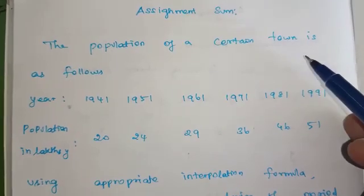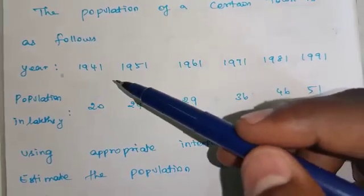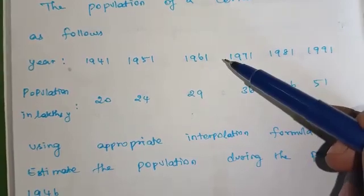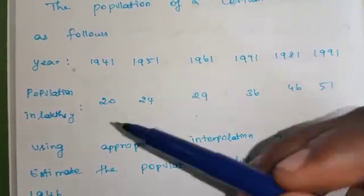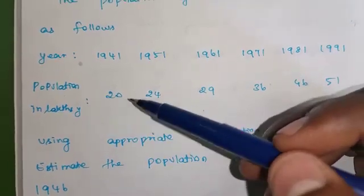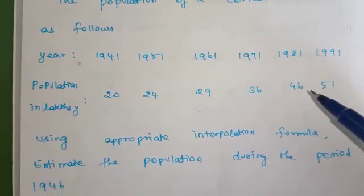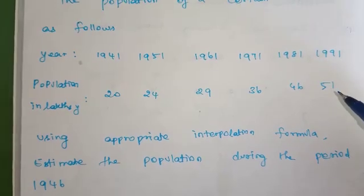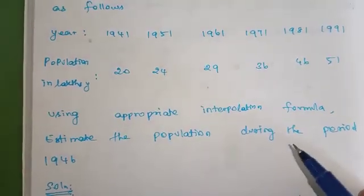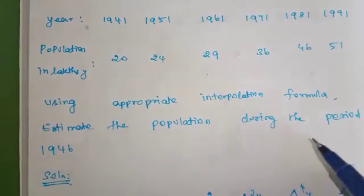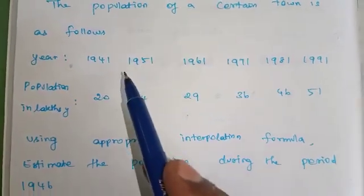The population of a certain town is as follows. Year: 1941, 1951, 1961, 1971, 1981, and 1991. Population in lakhs: 20, 24, 29, 36, 46, and 51. Using the appropriate interpolation formula, estimate the population during the period of 1946. So 1946 is the question.